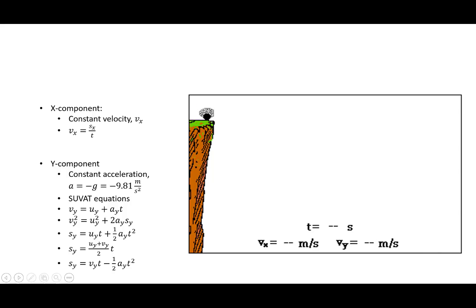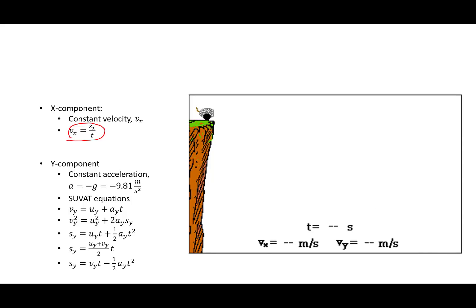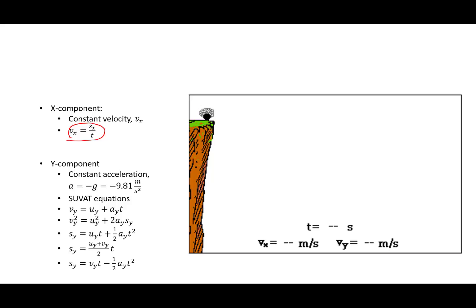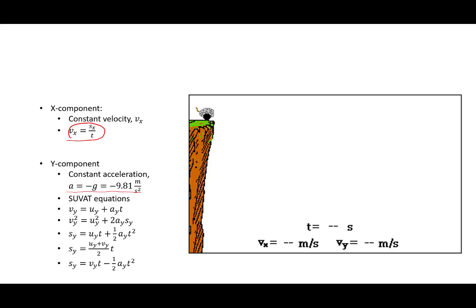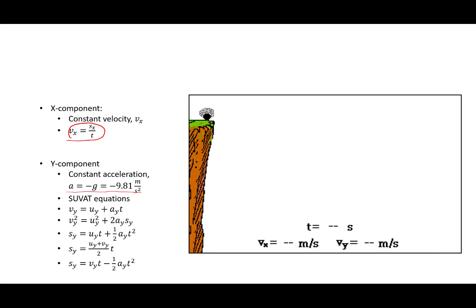Mathematically, what that means is in our x direction, we analyze the motion like it's constant velocity motion — velocity equals displacement over time, our constant velocity equation. In the y direction, we have a constant acceleration of negative g, which on Earth is negative 9.81 meters per second squared. So we can analyze it just like any constant acceleration equation. We're going to use the SUVAT equations in the y direction.